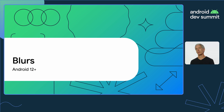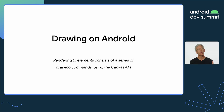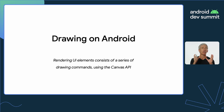Let's talk about blurs. You could do blurs before, but it wasn't necessarily obvious how to do that. We're making that a lot easier as of Android 12. But before we talk about blurs, let's talk about how drawing happens on Android. In general, most drawing operations — even when it's just a UI element on the screen — go through a series of primitive operations at low-level APIs like Canvas, Paint, and Drawable.